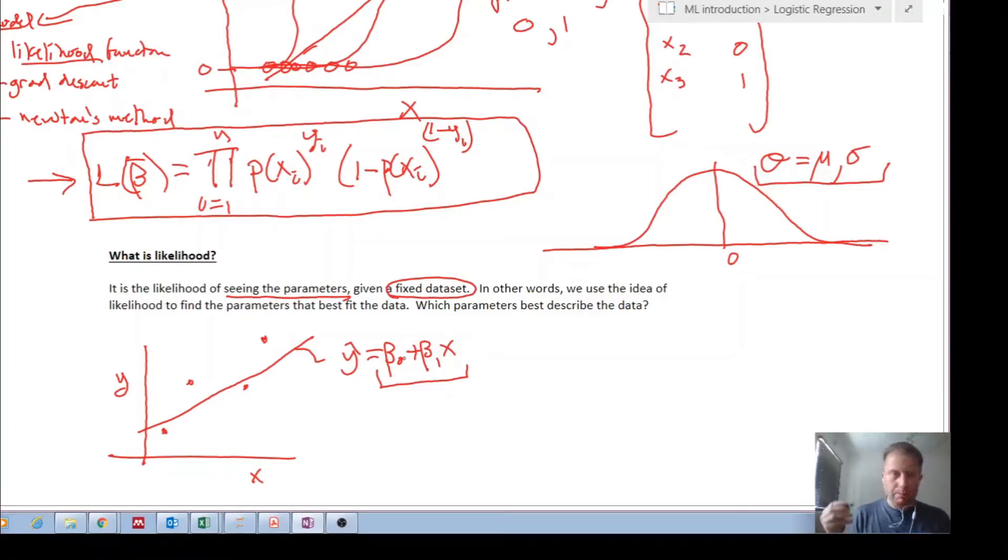So this is essentially what maximum likelihood is, although it's dealing with probabilities. So maximum likelihood, we have data. Now we're trying to find the parameters that best describe that data or govern that data. I think that's perhaps, hopefully an intuitive way of understanding that.